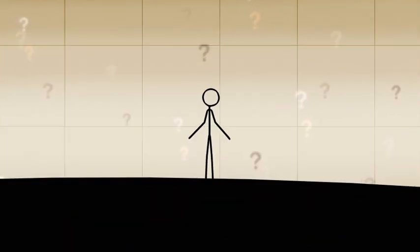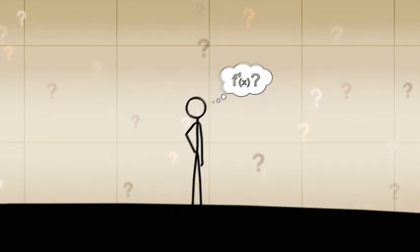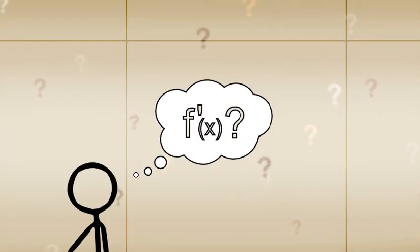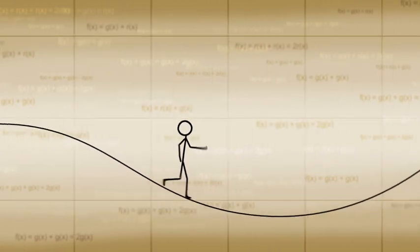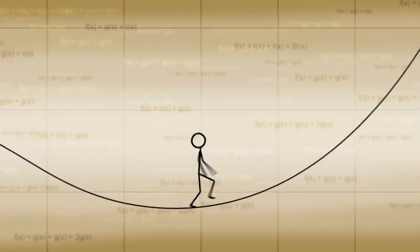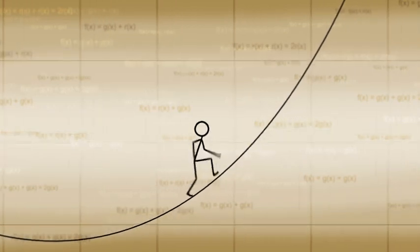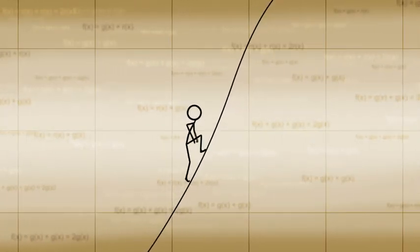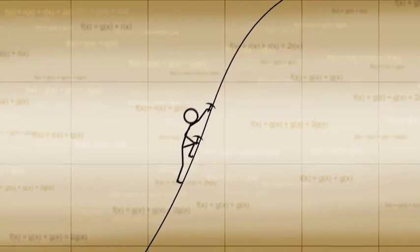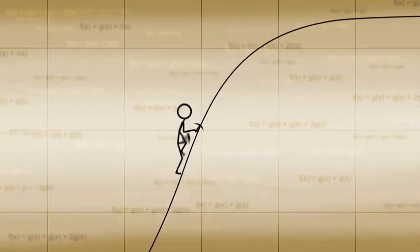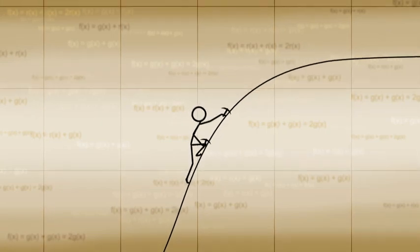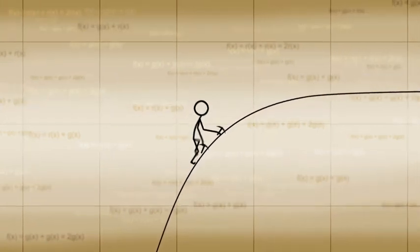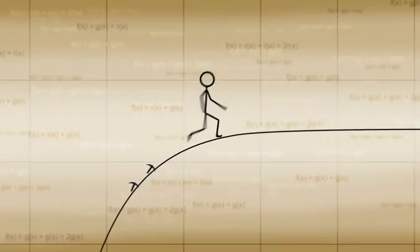What is a derivative anyway? Derivatives are functions that describe how quickly other functions change. If a function around some value of x moves up in value quickly as the values of x grow, then it could be said that the derivative of this function is large and positive around those values of x.